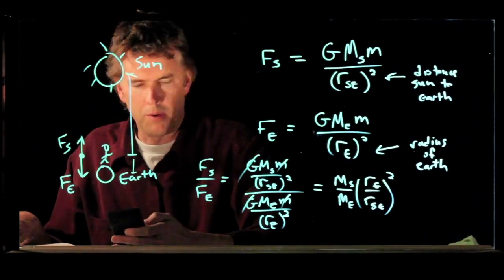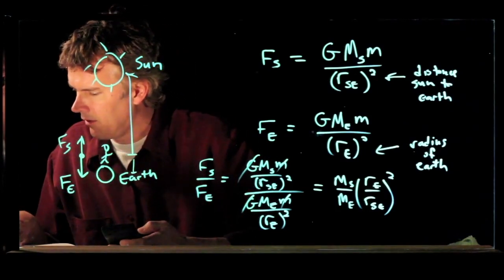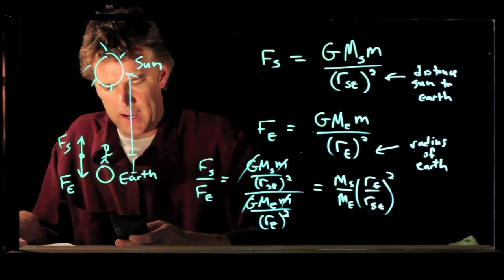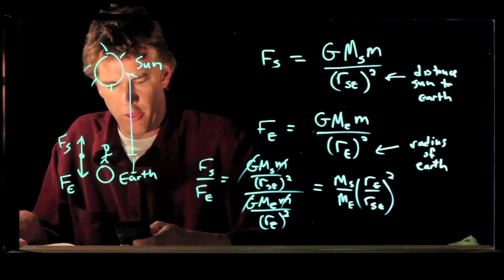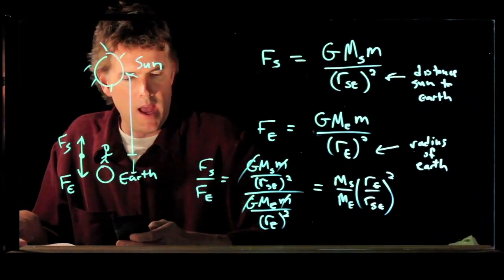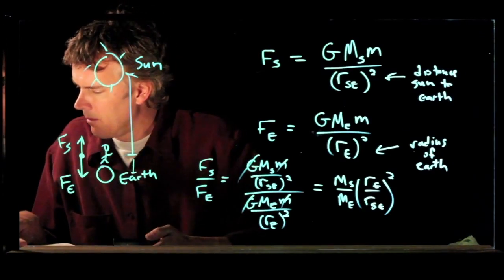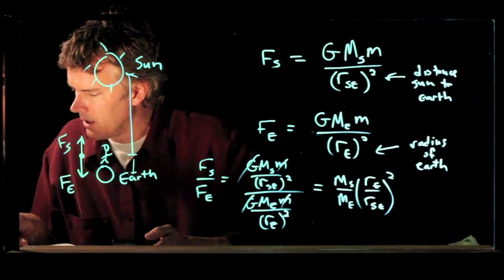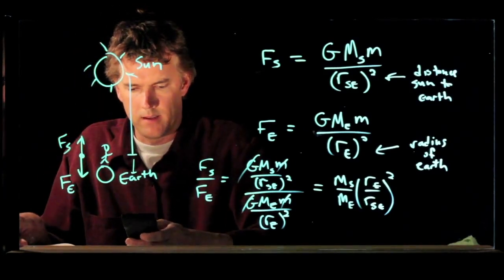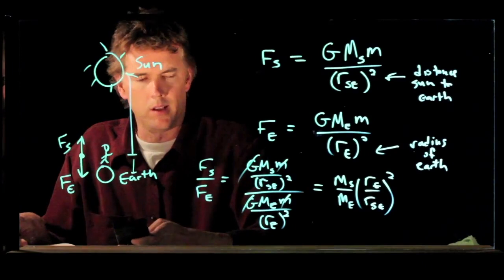And we multiply by the mass of the sun, which is 1.99 times 10 to the 30 kilograms. And we divide by the mass of the earth, which is 5.98 times 10 to the 24 kilograms.